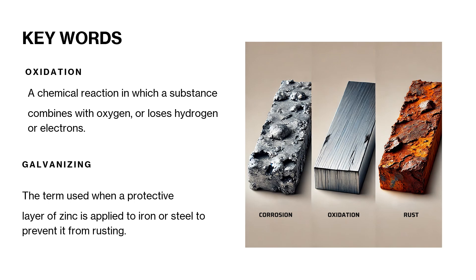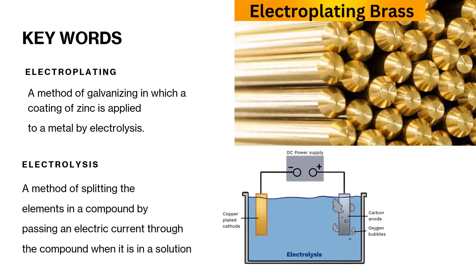Some more key words. Oxidation: a chemical reaction in which a substance combines with oxygen, or loses hydrogen or electrons. Galvanizing: the term used when a protective layer of zinc is applied to iron or steel to prevent it from rusting. Here are two more keywords. Electroplating: a method of galvanizing in which a coating of zinc is applied to a metal by electrolysis. Electrolysis: a method of splitting the elements in a compound by passing an electric current through the compound when it is in a solution.